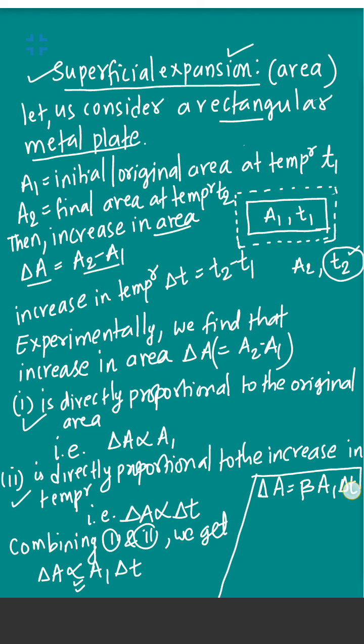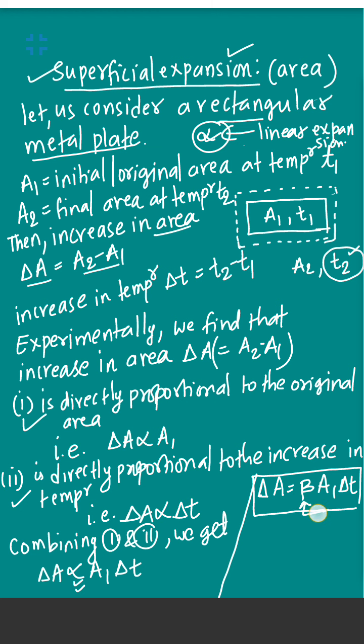So we can write: delta A equals beta times A1 times delta T. We have used alpha for linear expansion — alpha is the coefficient of linear expansion, its value is very small and depends on the nature of the material, whether copper, iron, or brass. Similarly, beta is the constant of proportionality here, and the value of beta also depends on the nature of the material used.